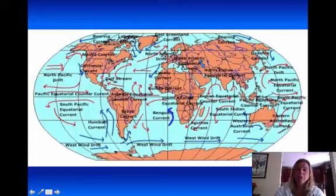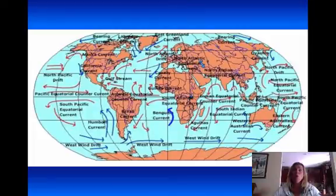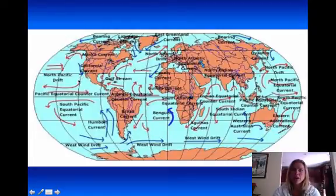Another current that we should be familiar with is going to be this California current here. Notice where that's coming from. From the north. Have you ever jumped in the water in California? Because I did. And the second my big toe hit the water, I was like, whoa! It was so cold. And that's because it's coming from the north down to the south. So that's carrying cold water with it. And if you think about it, there's always a little nip in the air, especially like San Francisco, that type of thing. And that's because of that California current. So you can see how these currents are all causing different things to happen.